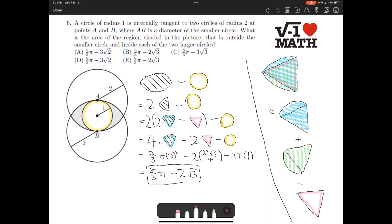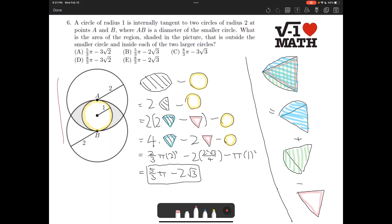For problem number 6, we have this diagram here. So we have two circles of radius 2 that intersect each other at the other's center. And we have a circle that is tangent to both circles internally. And this circle is radius 1, and the other circles have radius 2, both of them. Now we wish to find this shaded region.